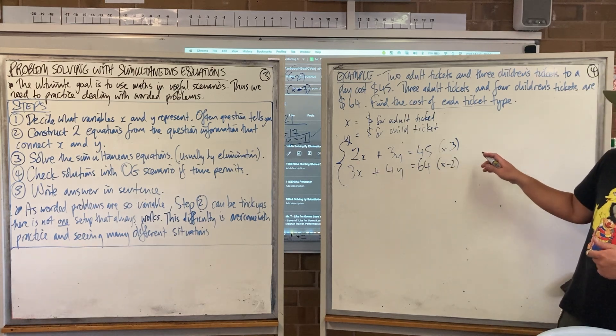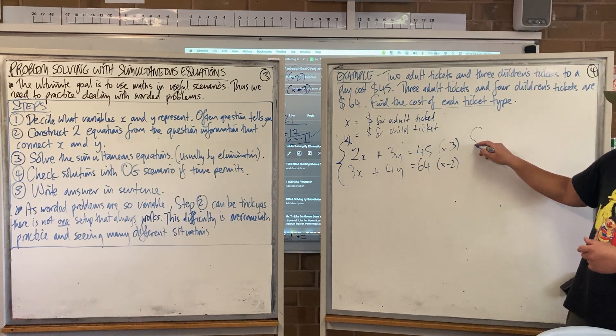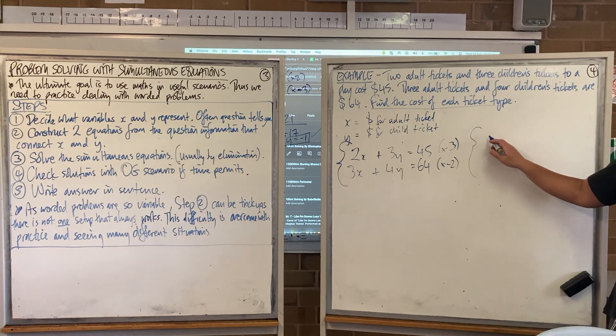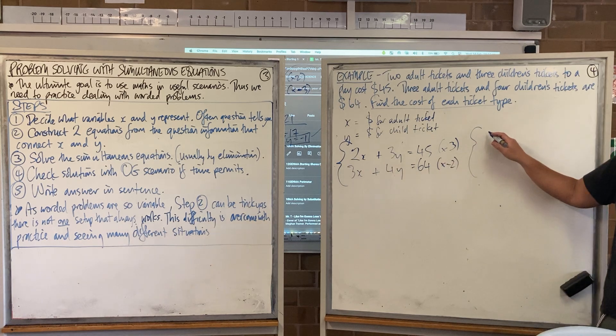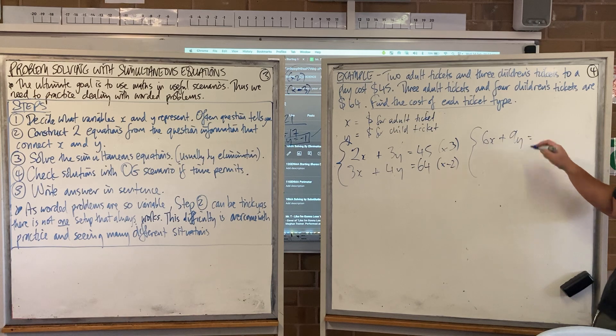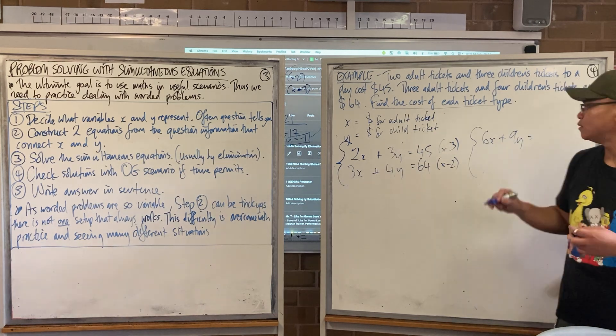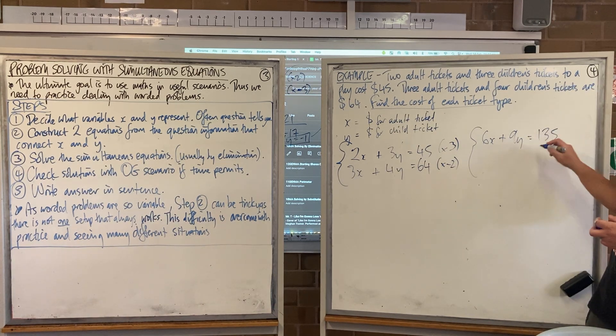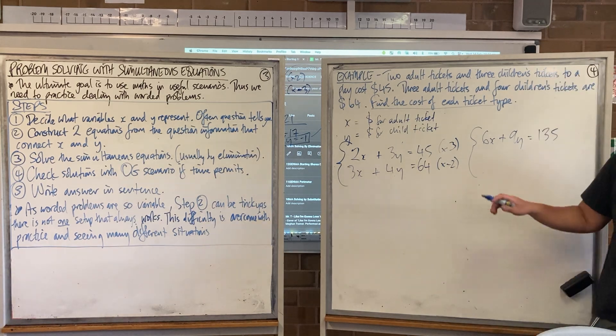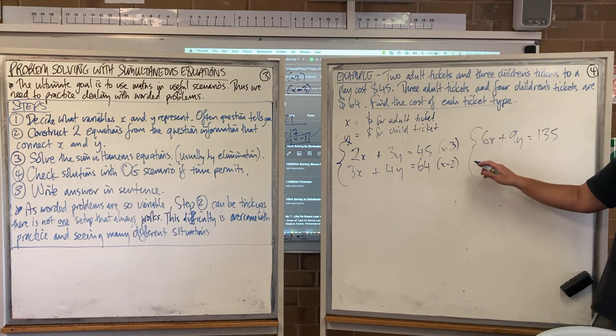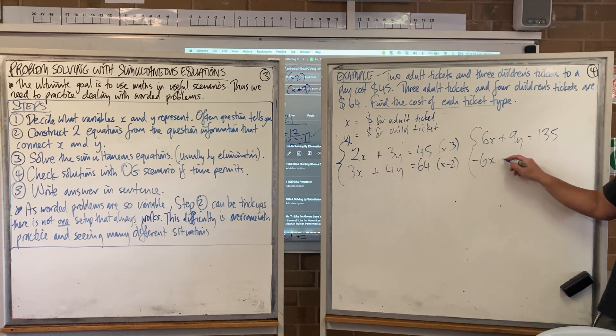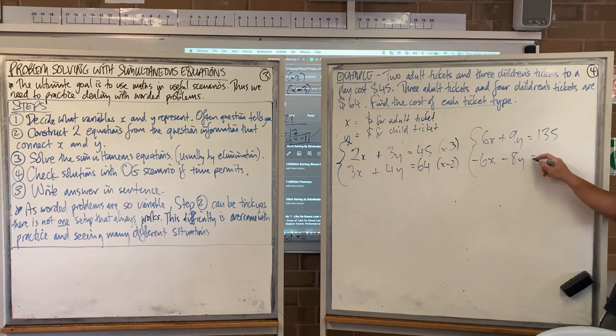So rewrite this after multiplying. After I've multiplied the top by three, someone read it out to me. Multiplying the top equation by positive three: 6x plus 9y equals 135. Next one, times it by negative two: -6x plus -8y equals -128.